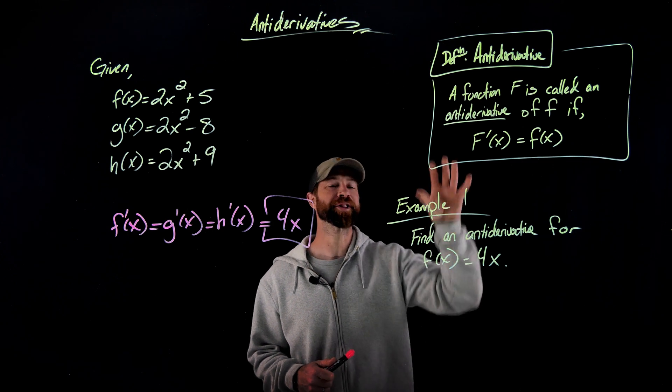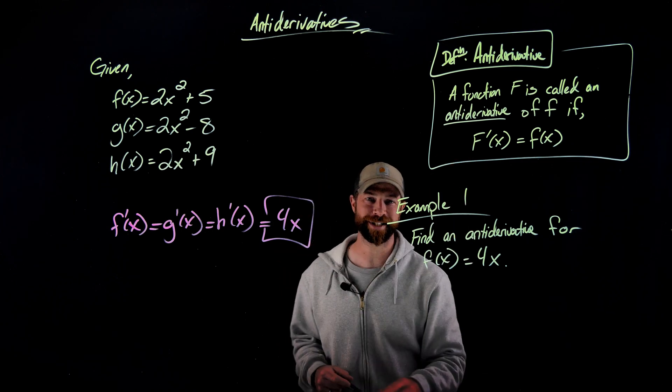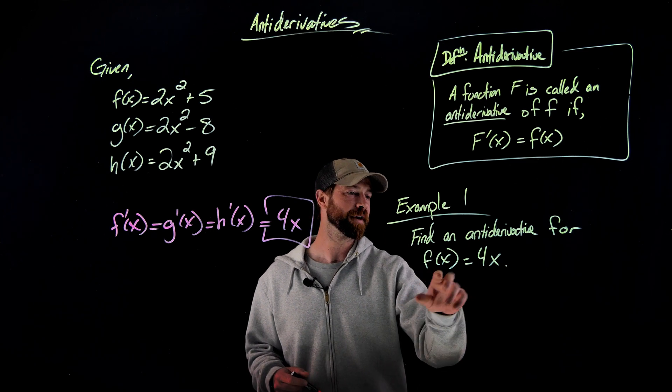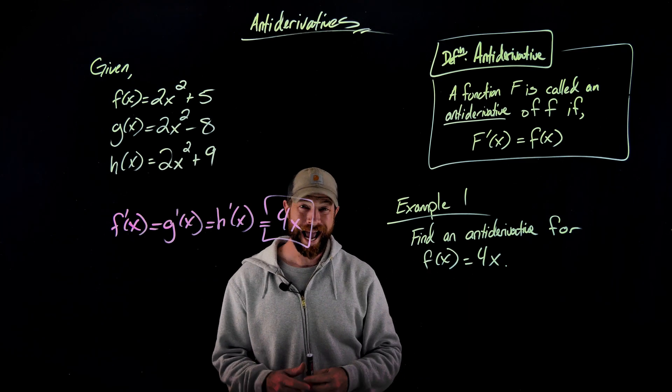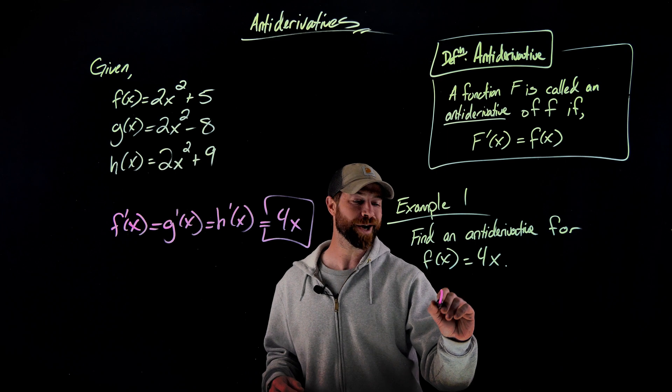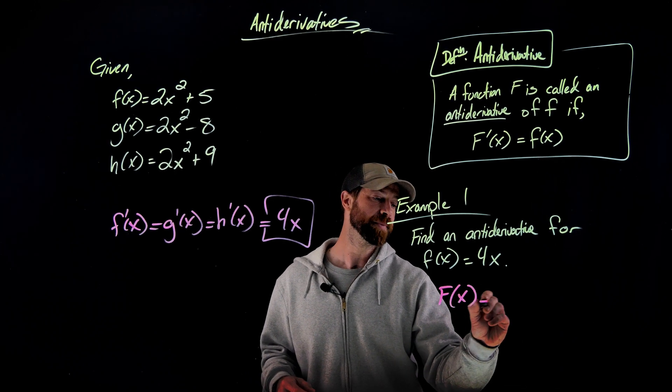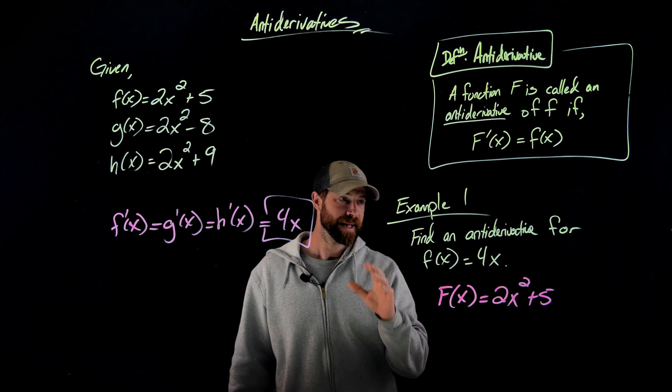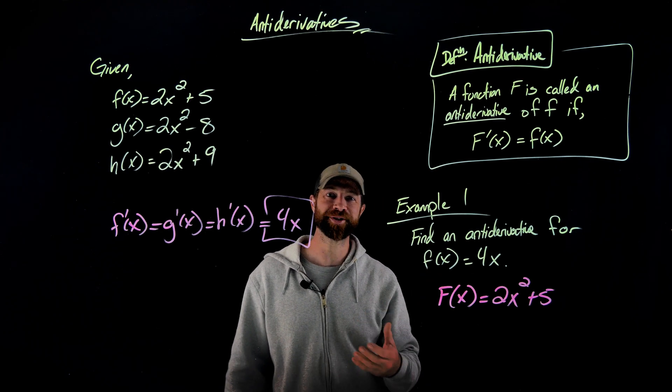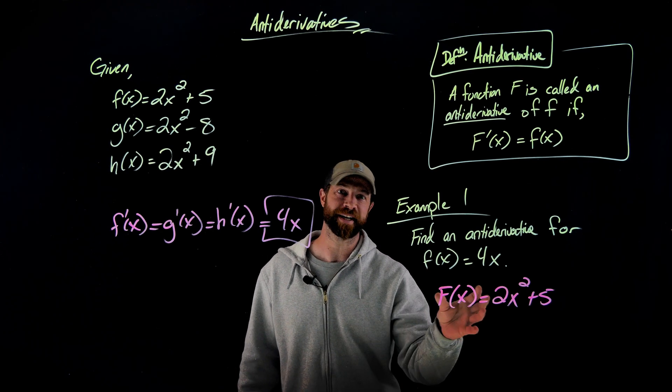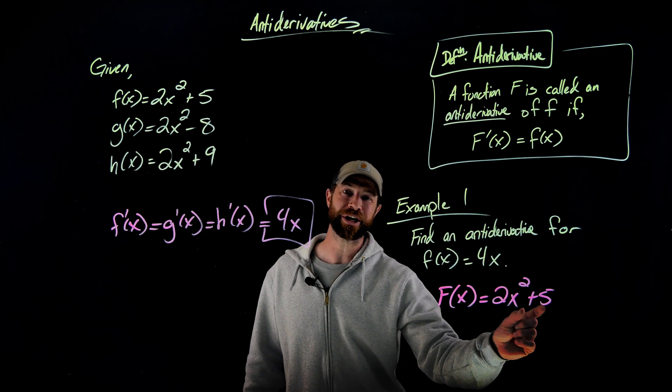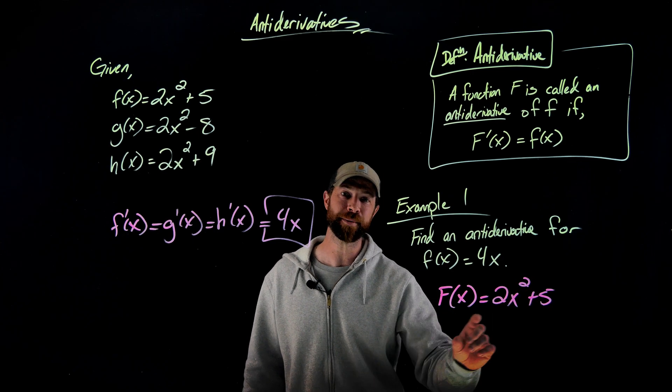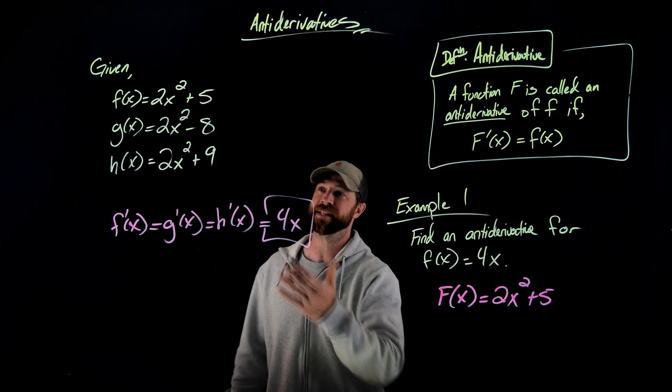So to tie together that definition with the previous conversation, if I was being asked here to find an antiderivative for the function 4x, I have many options. One of the options I could have here would be 2x² + 5. The important thing to say is there's actually an infinite number of antiderivatives I could choose just by changing this constant right here. The only important thing is that I would have this 2x² as a term and then plus any constant.